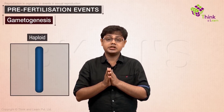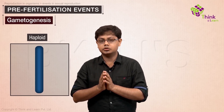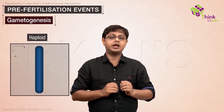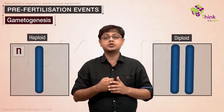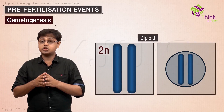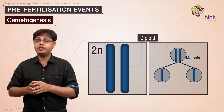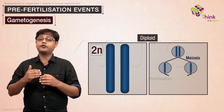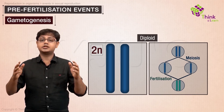Gametes are haploid germ cells that contain only one set of chromosomes, represented by N. Diploid organisms contain two sets of chromosomes, represented as 2N. In the most common scenario, diploid organisms produce haploid gametes through meiosis, which then fuse to form a diploid zygote from which a diploid organism develops.